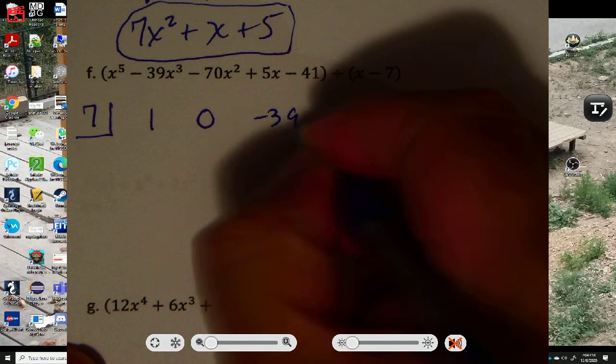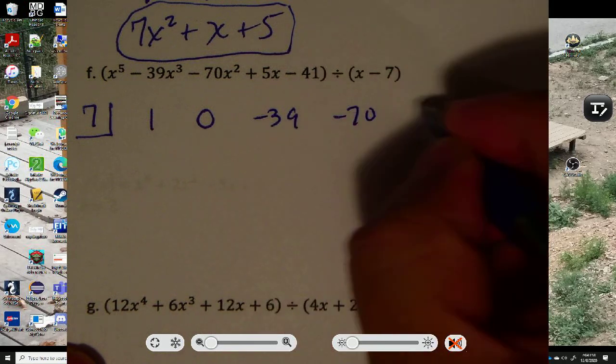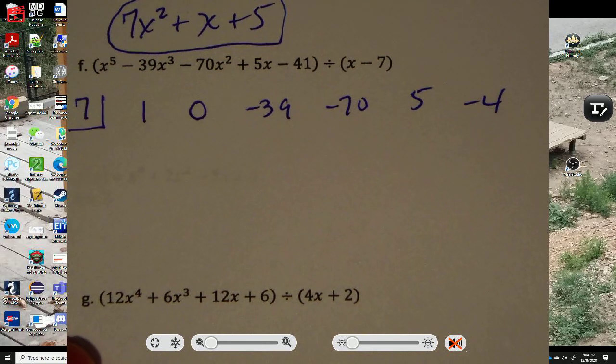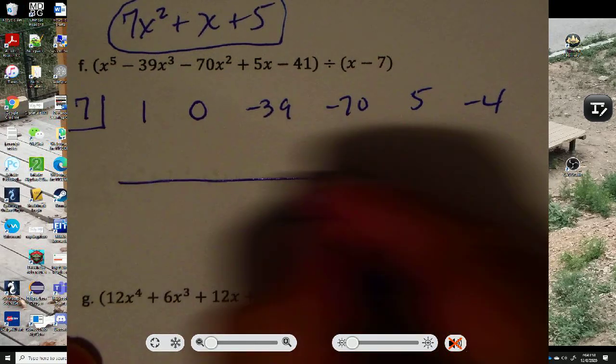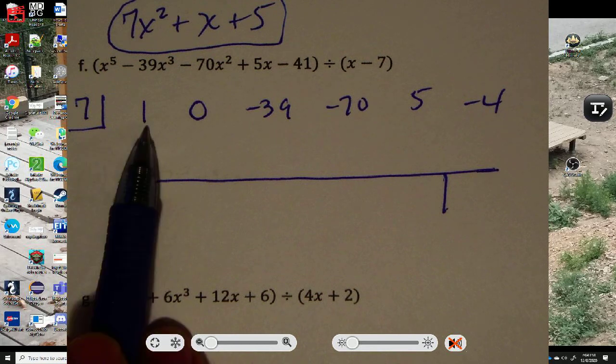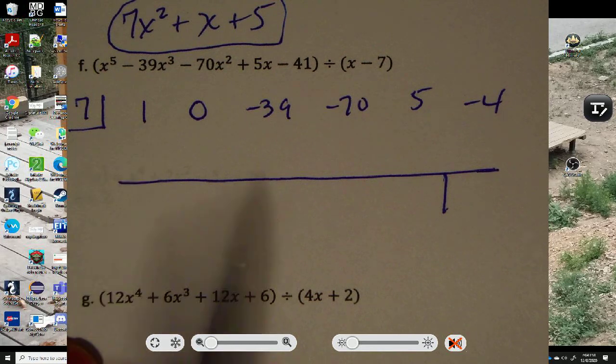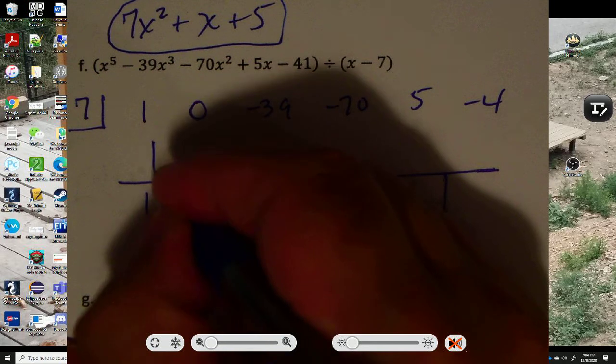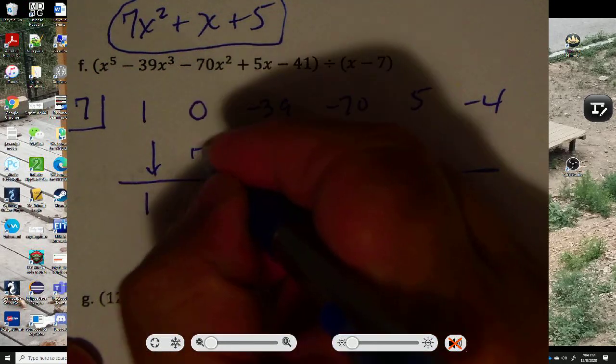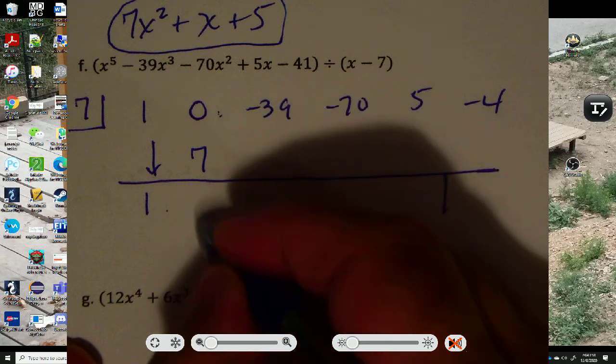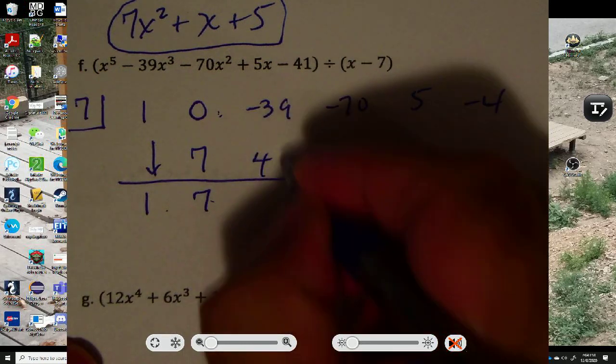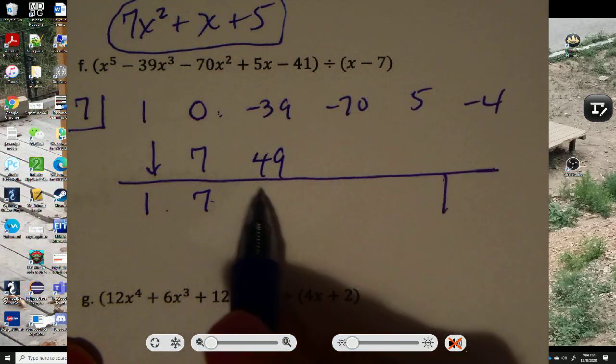And you got negative 39, negative 70, 5, and then negative 4. Then draw a nice long line and put a little cubbyhole at the end. So again, bring down the 1. Bring down the first term. Now you multiply. 7 times 1 is 7. Add. 0 plus 7 is 7. 7 times 7 is 49. Add. Negative 39 plus 49 is 10.